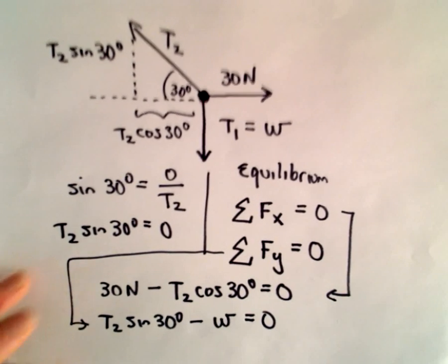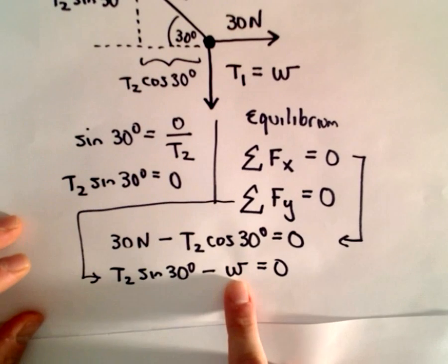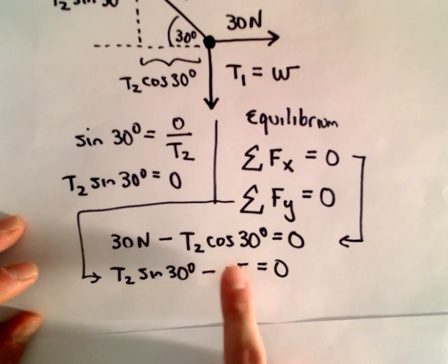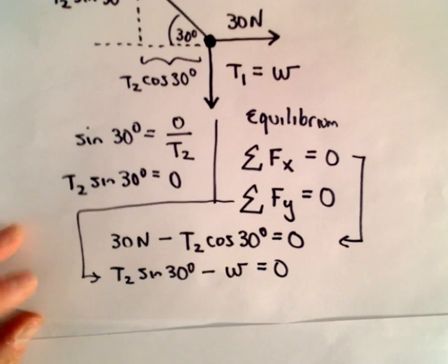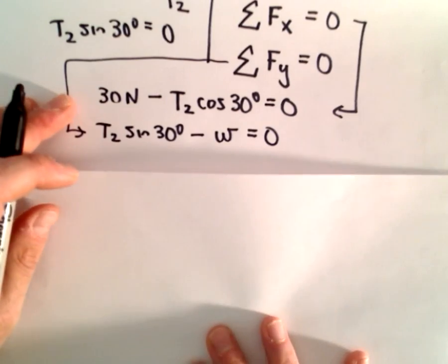So in this case, all we have to do now is just solve. So I'm going to solve, we're trying to eventually solve for w. Well I could solve for w if I knew T2. Well, I can figure out T2 from my first equation. So that's going to be our line of attack here.